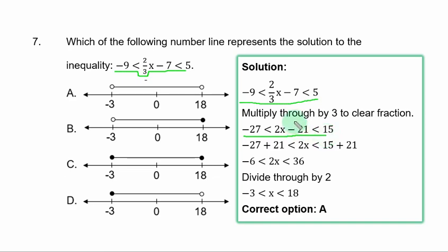You transfer minus 21 to both sides. Both left and right. So, you have minus 27 plus 21 less than 2x less than 15 plus 21. If you decide to break it down, you have the first and second term as one expression. The second and third term as another expression. That is why we are transferring minus 21 to both sides. It becomes plus.